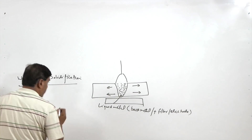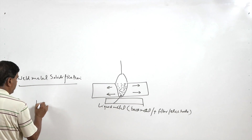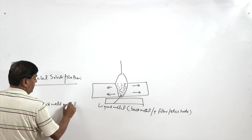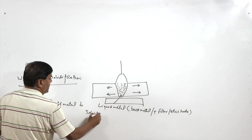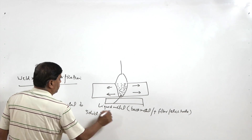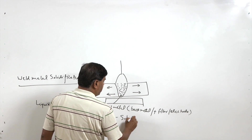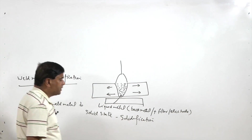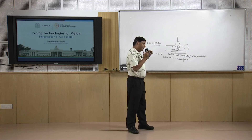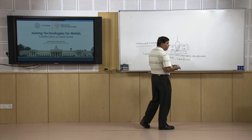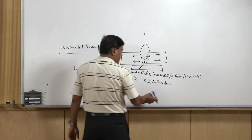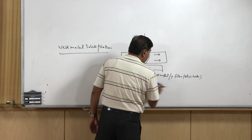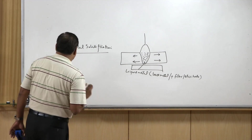The heat losses result in the transformation of the liquid weld metal to the solid state, and this is achieved through the solidification of the weld metal. The solidification of the weld metal is found to be different from what is typically observed in case of casting processes. We will talk about in which way it is different and in which way it is the same.